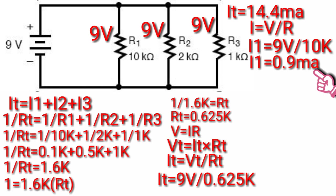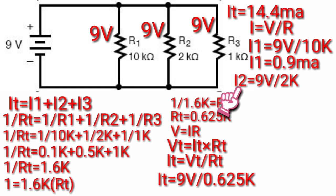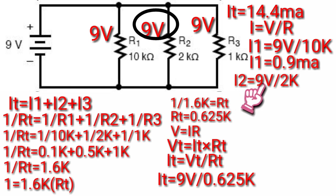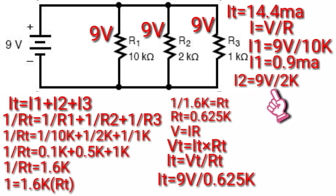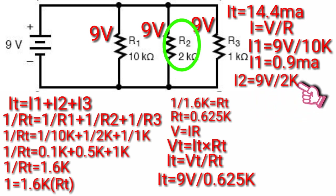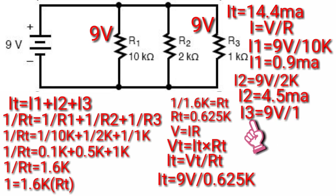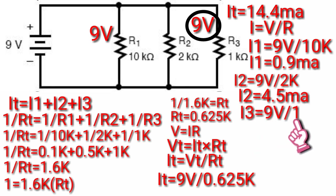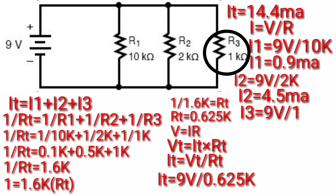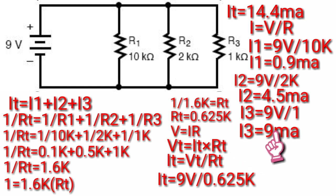Now let's calculate I2: I2 is equivalent to 9V divided by R2, 2K, so I2 will be 4.5mA. Then calculate I3: I3 is equivalent to 9V divided by R3, 1 kilo-ohm. Therefore I3 will be 9mA.